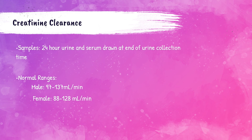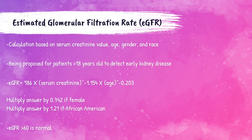The normal adult reference range for creatinine clearance in male patients is 97 to 137 milliliters per minute, and for female patients it is 88 to 128 milliliters per minute. This represents how many milliliters per minute of creatinine is being cleared by the kidney.